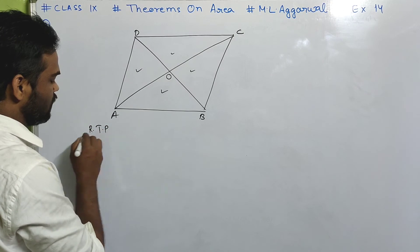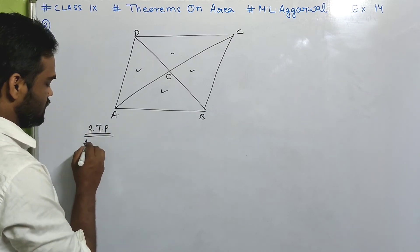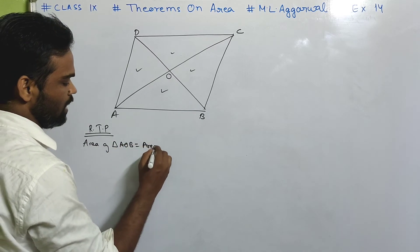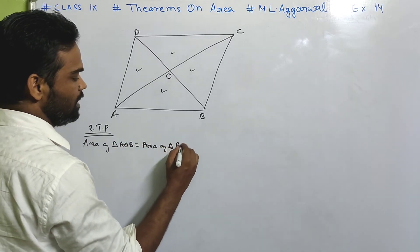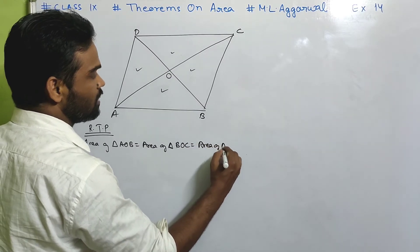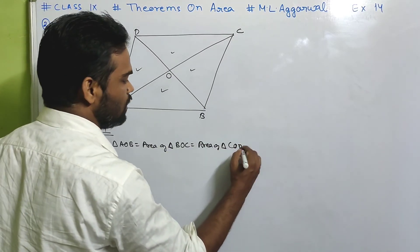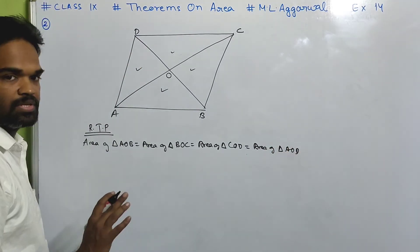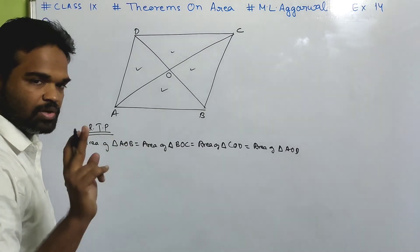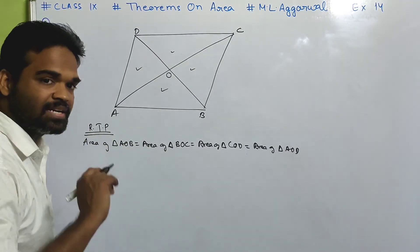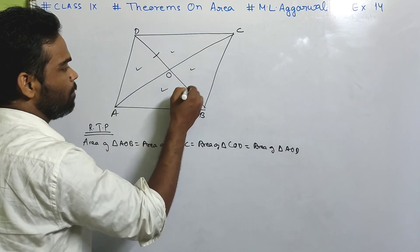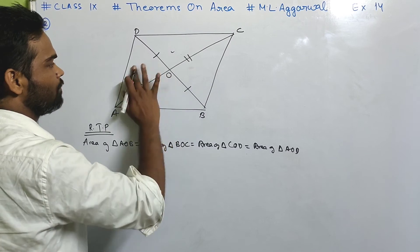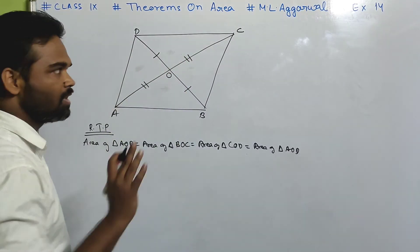What is required to prove? Area of triangle AOB equals area of triangle BOC equals area of triangle COD equals area of triangle AOD. In a parallelogram we know the diagonals bisect each other, which means DO equals BO and AO equals OC.